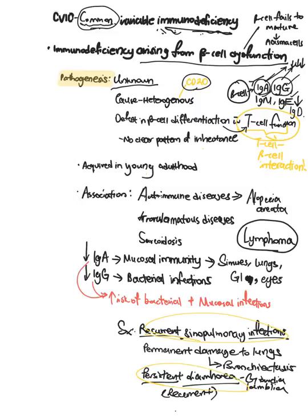To recap, Common Variable Immunodeficiency, or CVID for short, is an immunodeficiency due to B-cell dysfunction. It fails to mature into the plasma cells which are responsible for producing immunoglobulins. How this comes about is largely unknown and it's relatively heterogeneous. Many cell surface molecules could be affected, one of them is CD20. There's also a defect in B-cell differentiation as well as T-cell function. There's no clear pattern of inheritance. This condition can be acquired in young adulthood and it's associated with certain autoimmune diseases such as alopecia areata, granulomatous diseases, as well as lymphoma. Patients have a shortened lifespan due to lymphoma as well as recurrent infections.